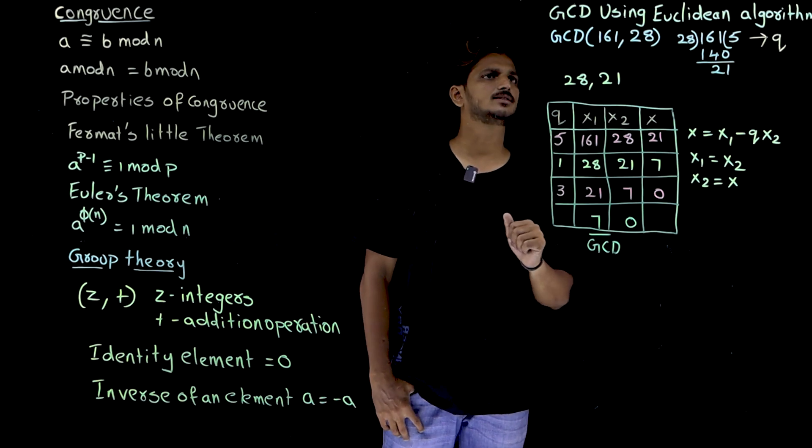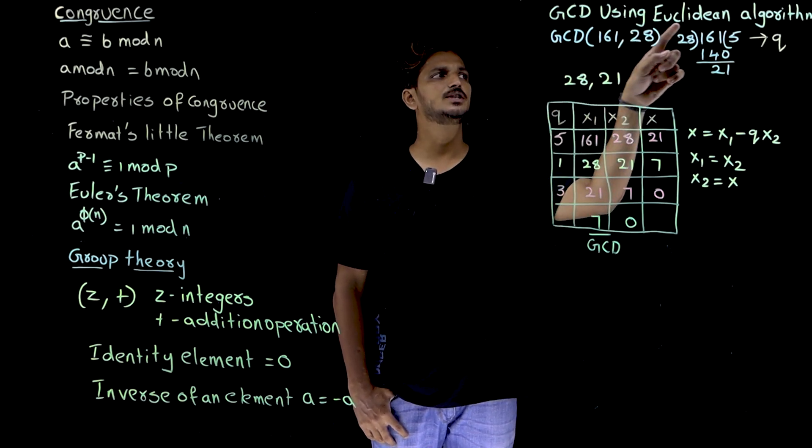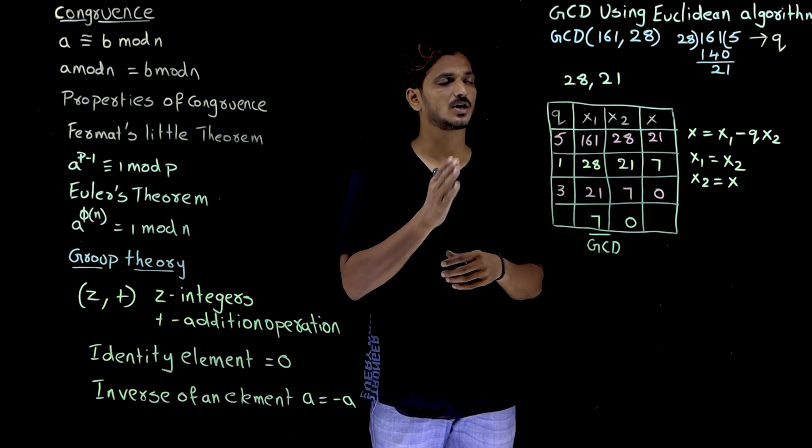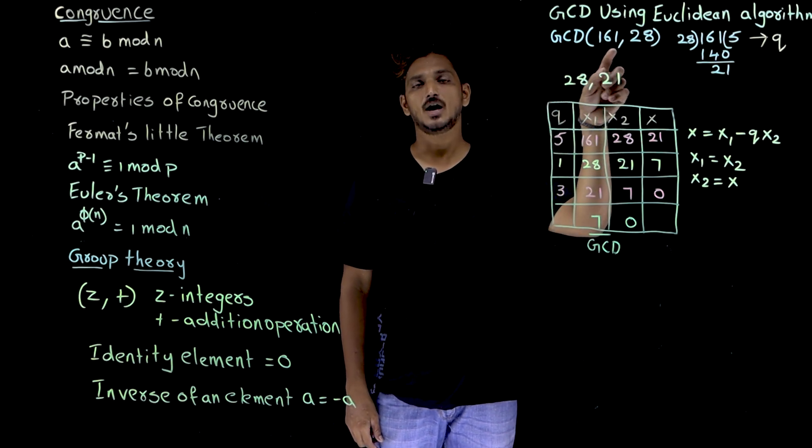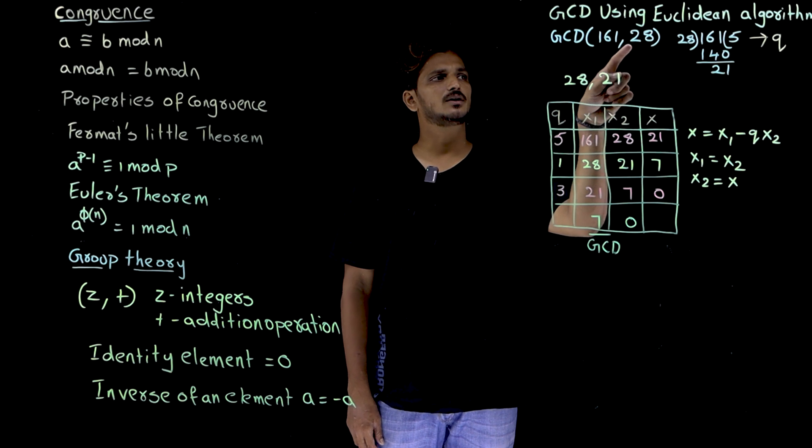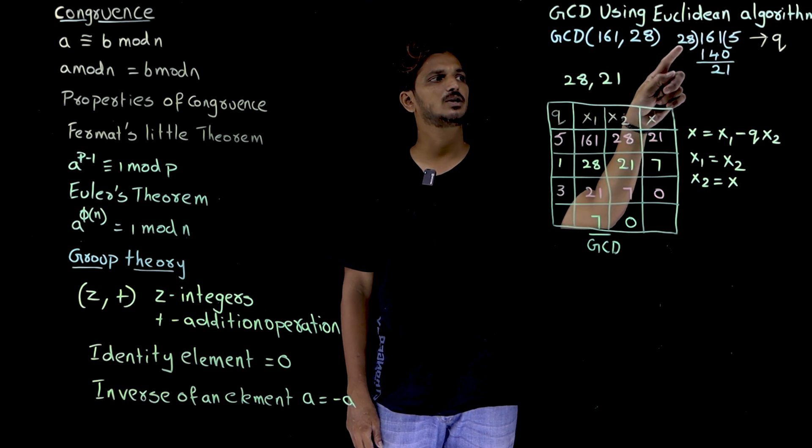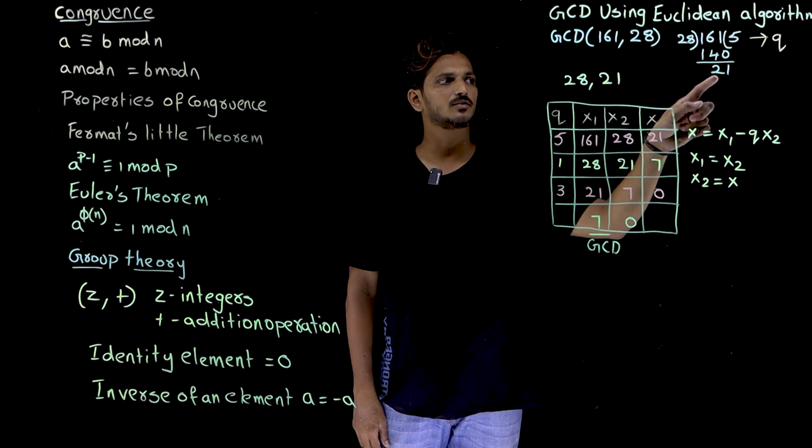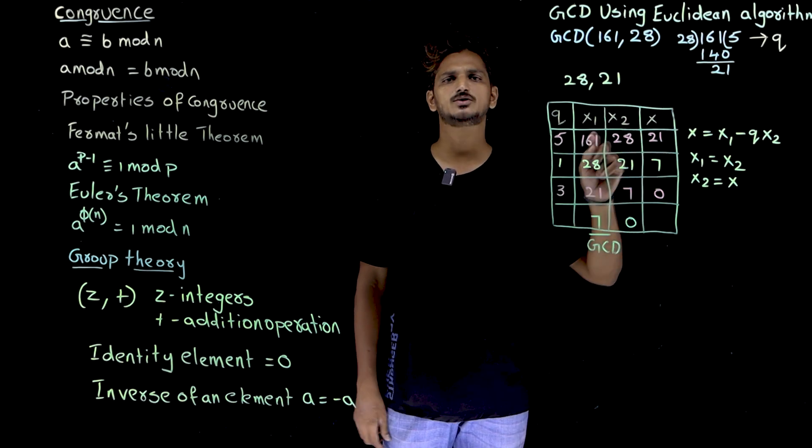So coming to today's class, these are the concepts which we are going to use here in our coming classes. GCD using Euclidean algorithm. Finding GCD using Euclidean algorithm, these concepts are very easy. Finding the GCD of 161 comma 28, how we have done the GCD value? 161 is the biggest number, 28 is the smallest number, so biggest number divided by smallest number. 161 divided by 28, which is 5. Quotient is 5 and remainder value is 21, means 28 times 5 is 140, 161 minus 140, which is remainder value is 21.